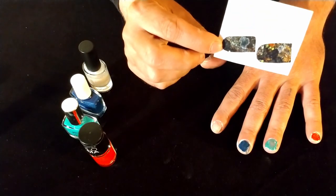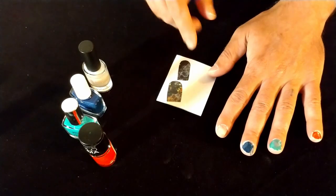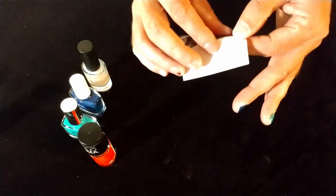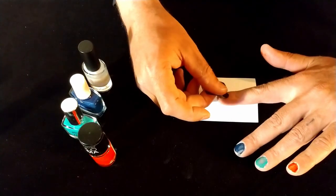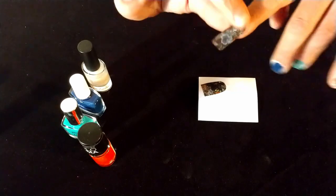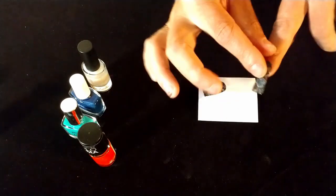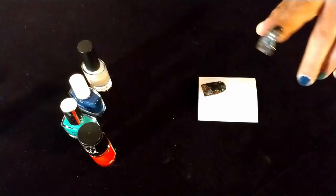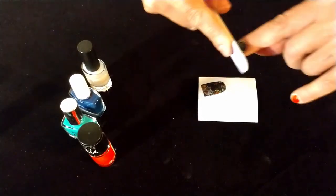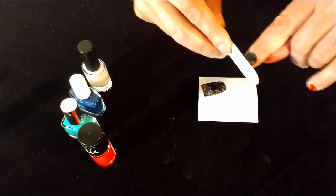Nail stickers. This is a special product for nails and it's very simple to use. You basically just glue them onto your nail. You fold the sticker around the edge of the nail, and then you file off the sticker at the edge.